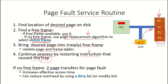If there is no free frame, there are two page transfers: the victim frame must be transferred from main memory to the hard disk, and then the required page must be fetched from the hard disk. If a free frame was available, only one transfer is required — from disk to main memory into the free frame. Having no free frame means two page transfers, which increases the effective access time.